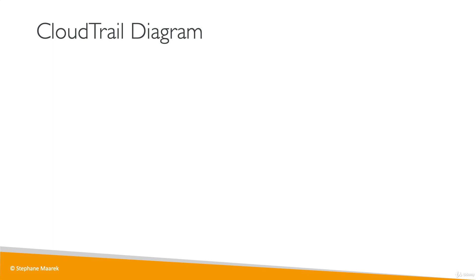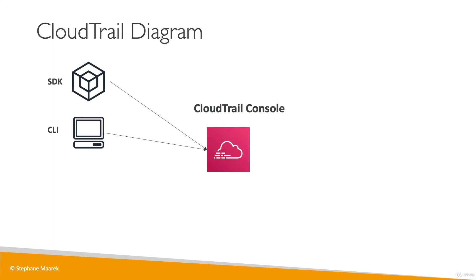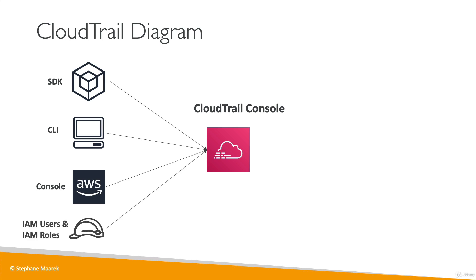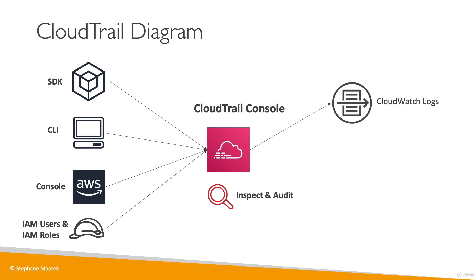To summarize: CloudTrail is in the middle, and actions from the SDK, CLI, console, IAM users, IAM roles, or other services will appear in the CloudTrail console. You can inspect and audit what happened there. If you want to retain events for more than 90 days, you can send them into CloudWatch Logs or into an S3 bucket.